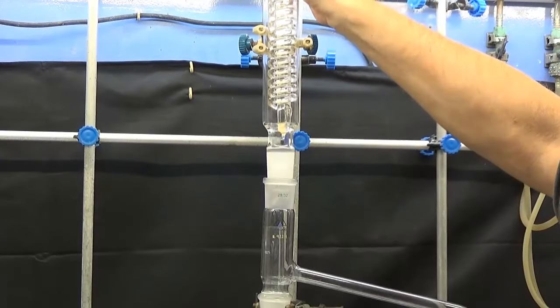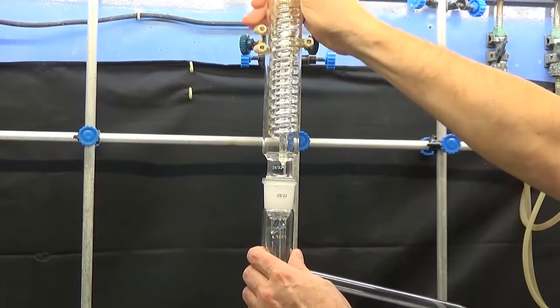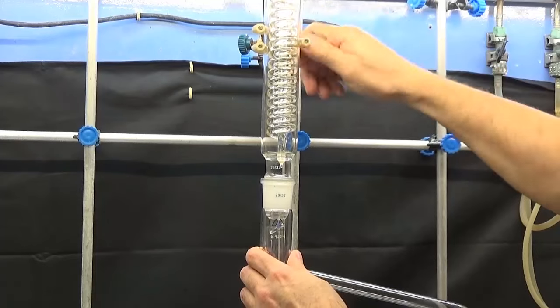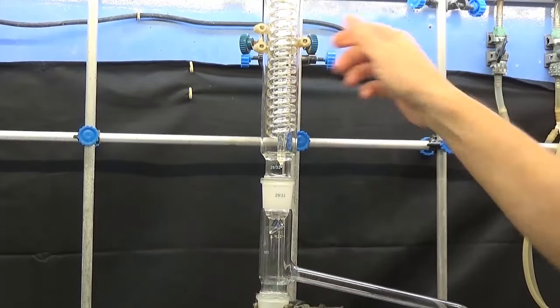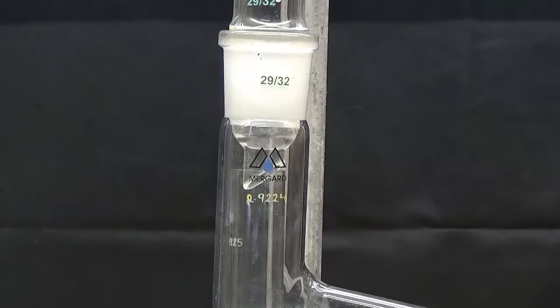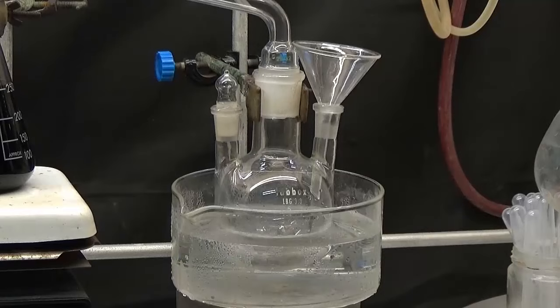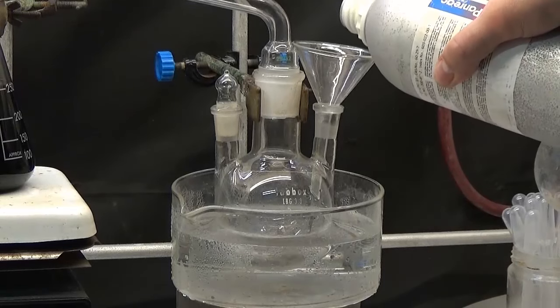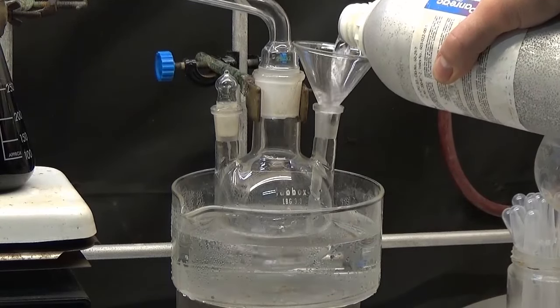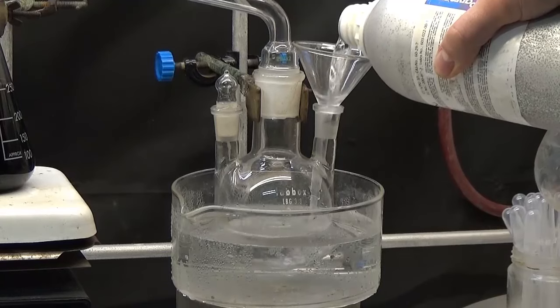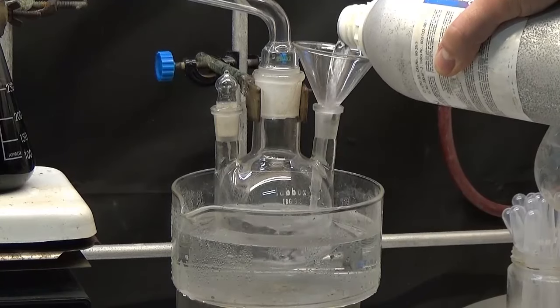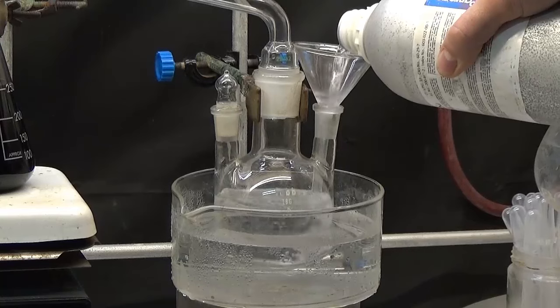We adjust the condenser. It's important that the condensed ether falls in the center funnel. Put the evaporation 250 milliliter flask in a warm water bath. Fill the evaporation flask with 200 milliliters of ether.